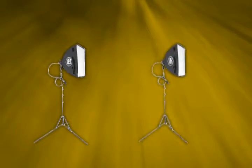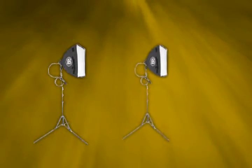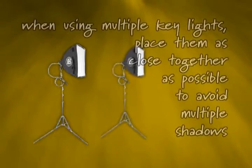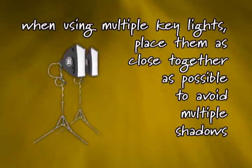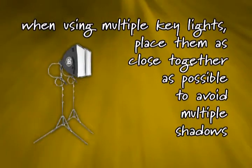If you need two or more key lights to get enough light on your scene, place them as close together as possible so they merge into one light to avoid multiple shadows.